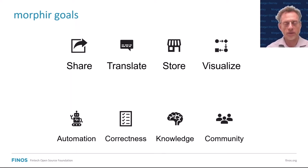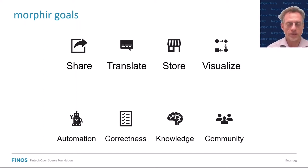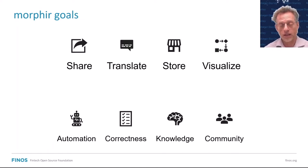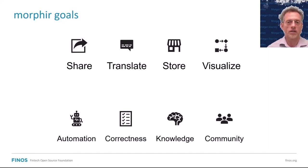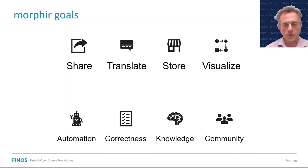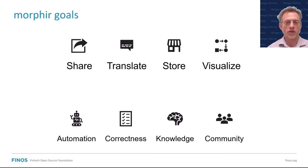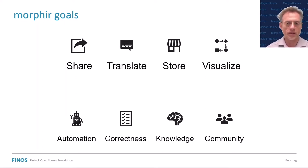We want to build knowledge — we want new developers and business users to understand the system and have confidence that what we've developed is actually what they wanted. There are a lot of things we can do with automation that allow business users to have that confidence, such as showing data flow through the system and why it's making decisions — not just that a decision was made, but why. Finally, we want to build a community. Once people start to use Morpher and understand it, they come up with creative solutions that build a stronger ecosystem. That was part of the motivation for open sourcing — we felt we could build a really strong ecosystem around it.